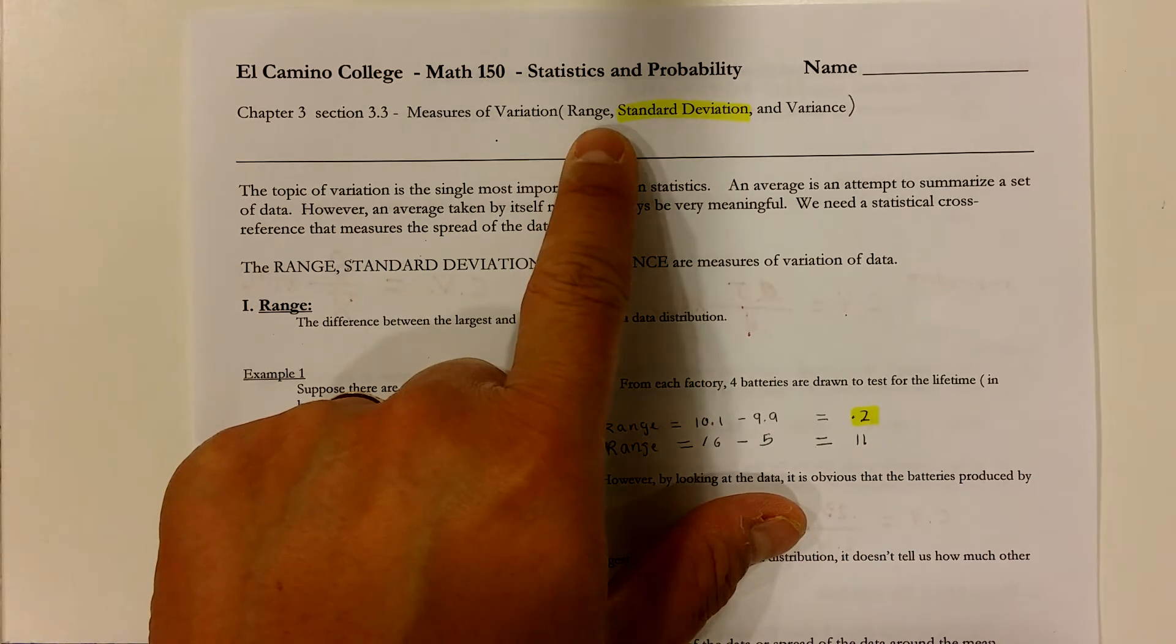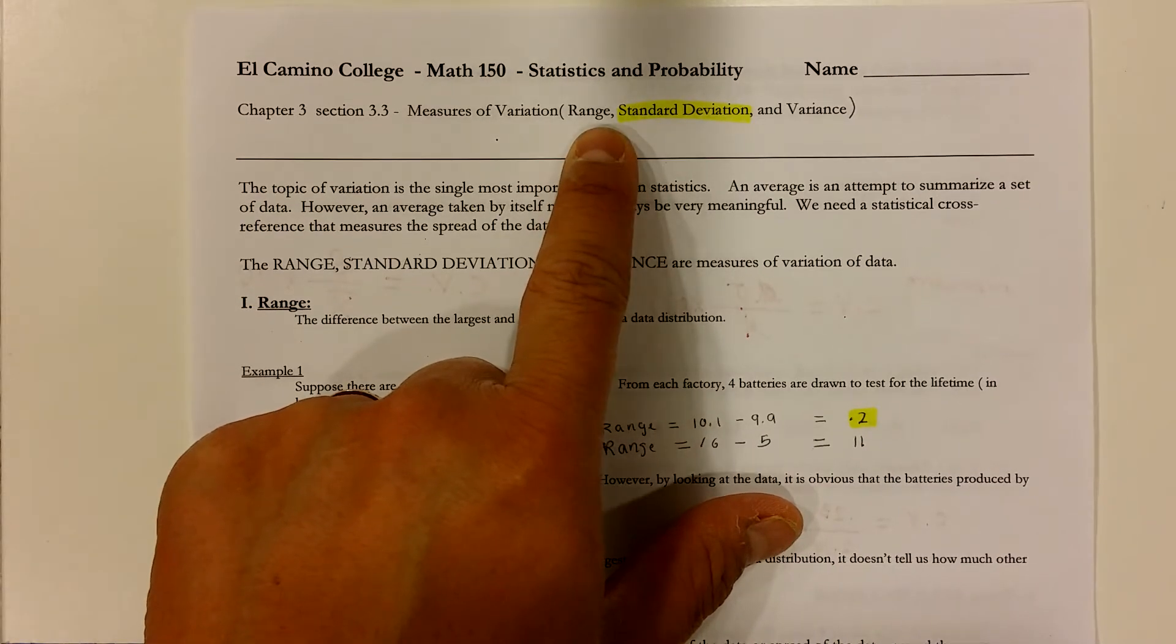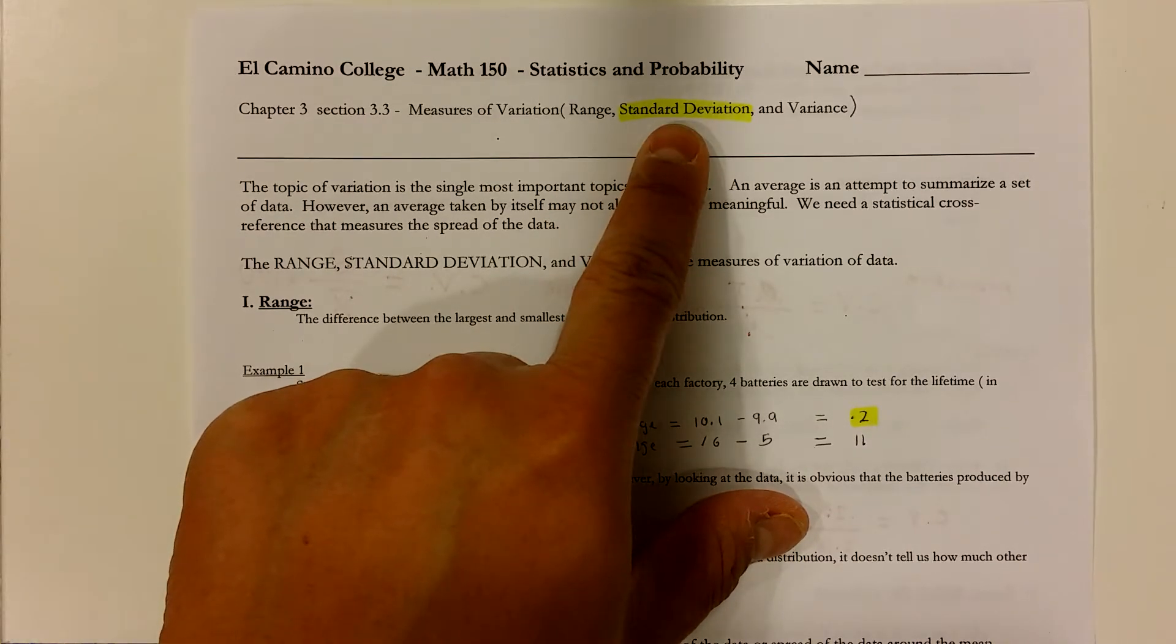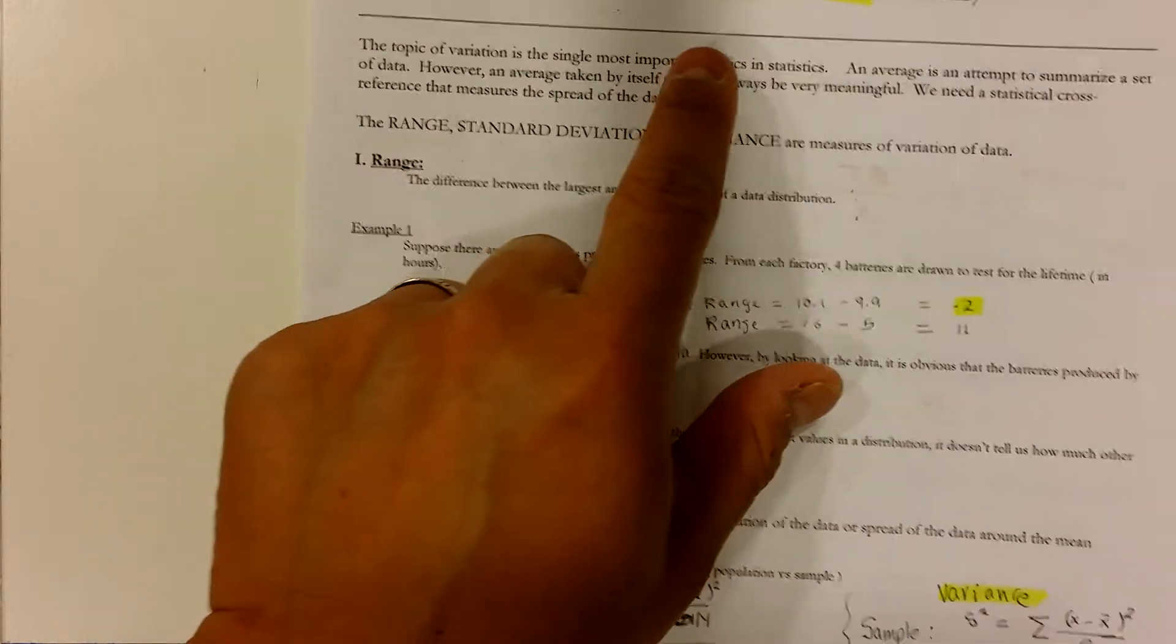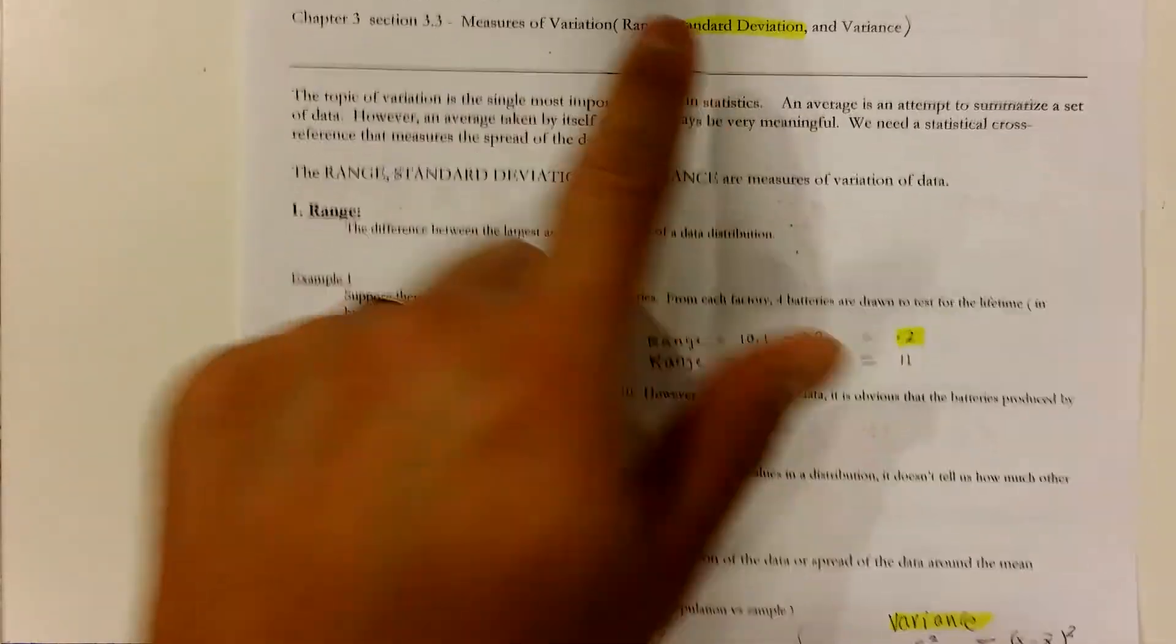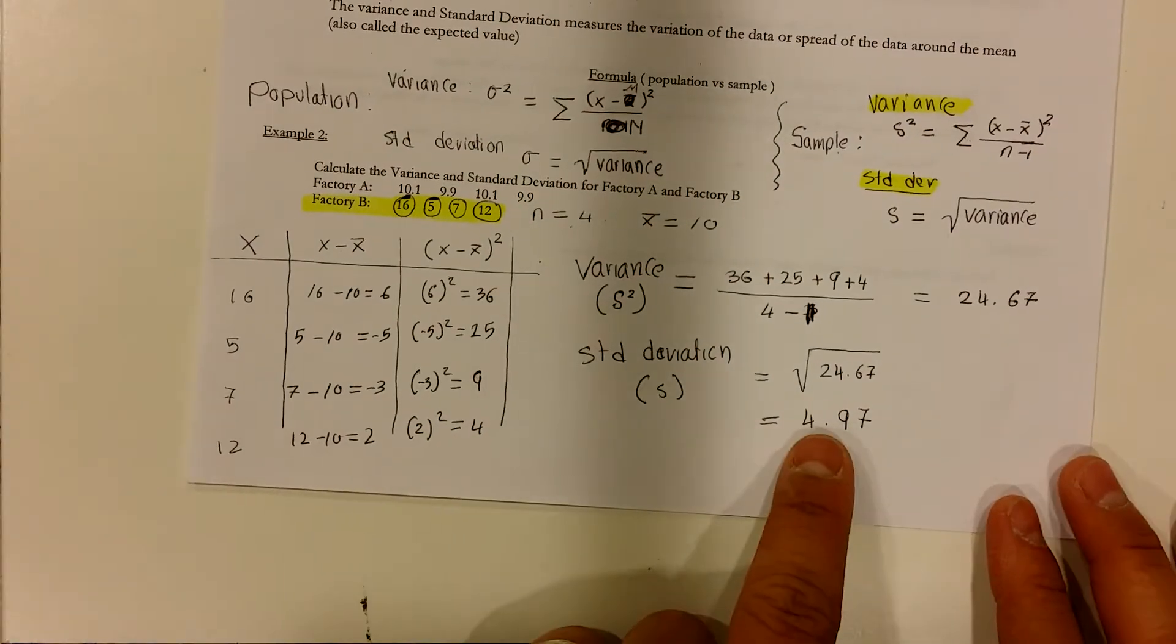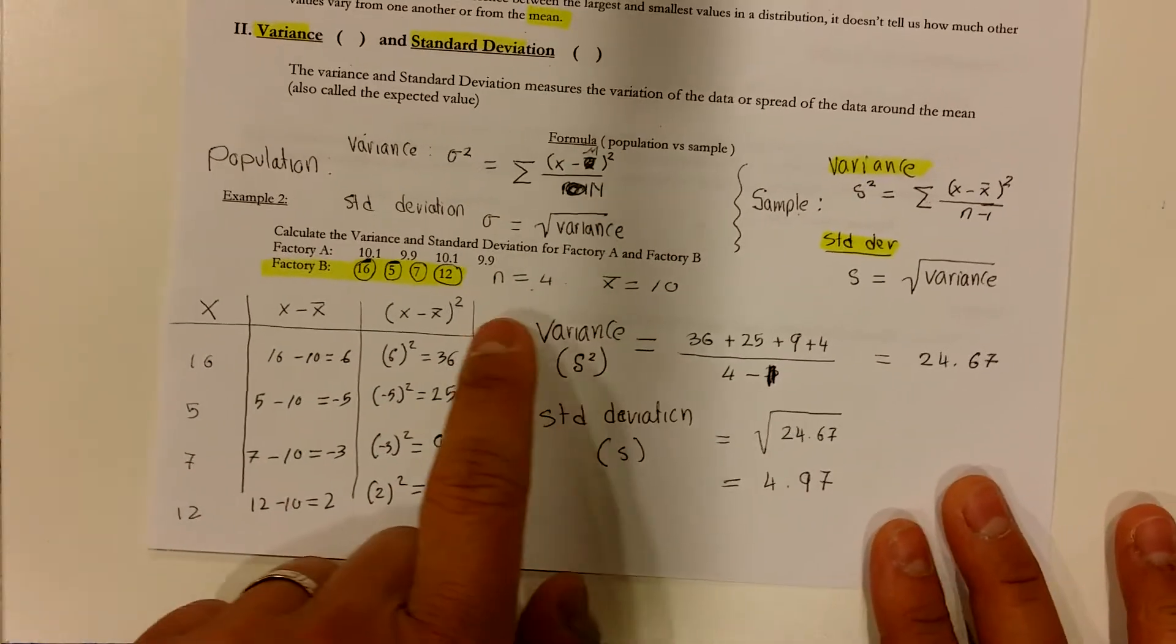You compute either the range, which is the maximum value in your data minus the minimum value, or you find the standard deviation. I would encourage you to review the standard deviation because that number tells us something about our data.